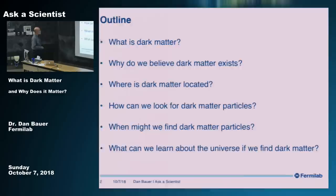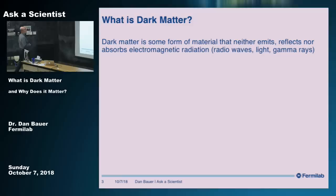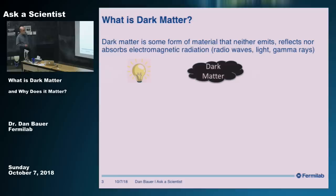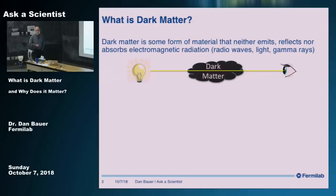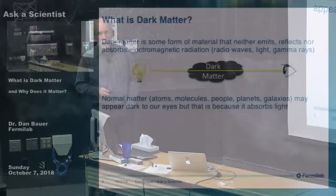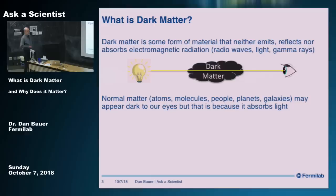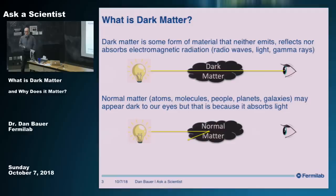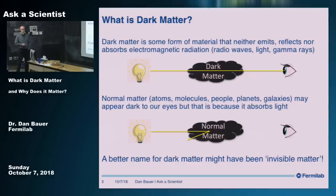So let's start with what is dark matter. The basic definition is it's some form of matter that doesn't emit, reflect, or absorb electromagnetic radiation — light and all the different variations of light, like radio waves, gamma rays. Just picture that: you have a source of light, you have this cloud of dark matter, you have an eyeball — the light just goes straight through. It doesn't bounce off, it doesn't interact in any way with the dark matter. Whereas normal matter might appear dark to our eyes, but that's because it absorbs or reflects light. Dark matter doesn't interact at all with light.